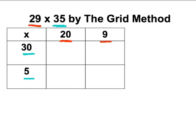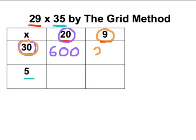Now all I do is literally work round square by square. So the first sum is I do 30 times 20, which is 600. And then the second sum is 30 times 9, which is 270. The third sum, just working round, is I do 5 times 20, which is 100.